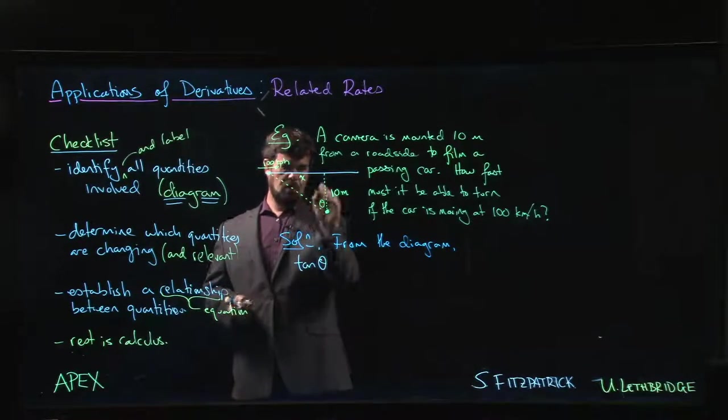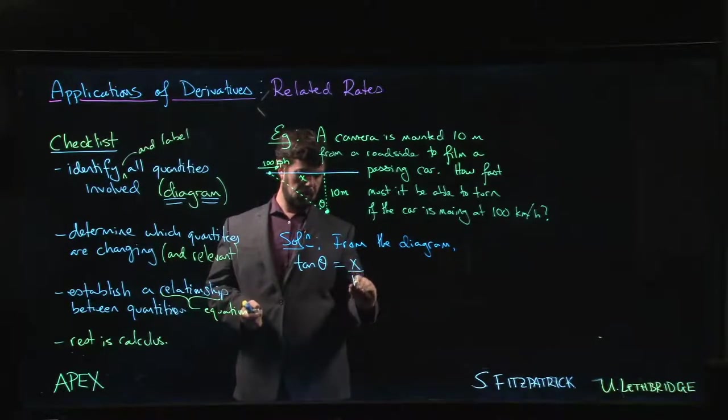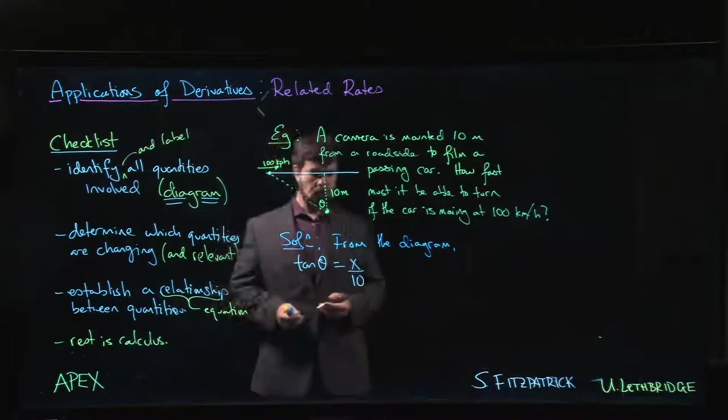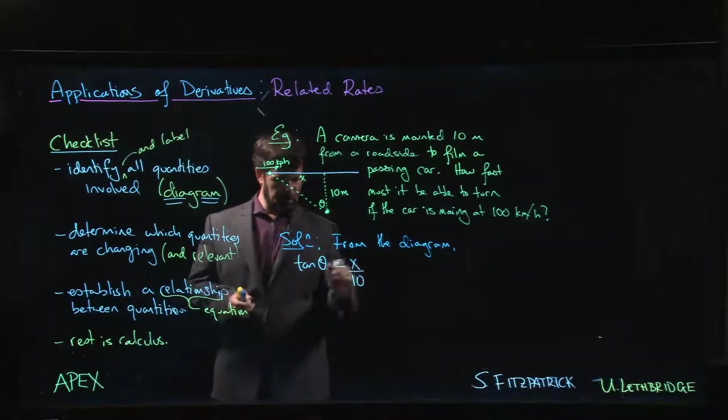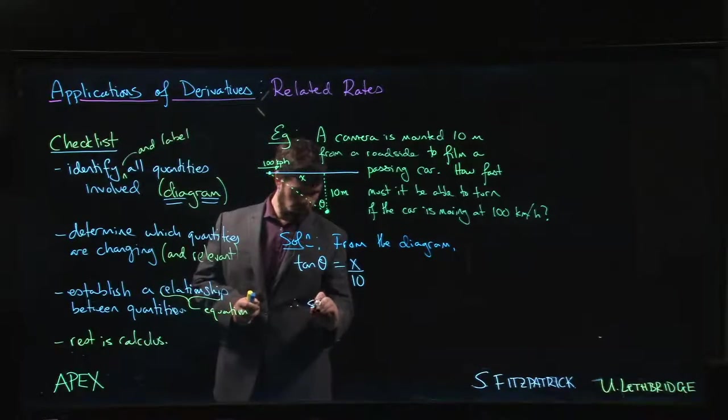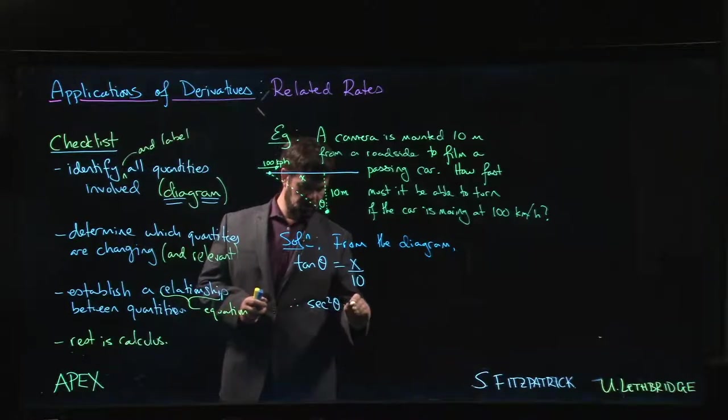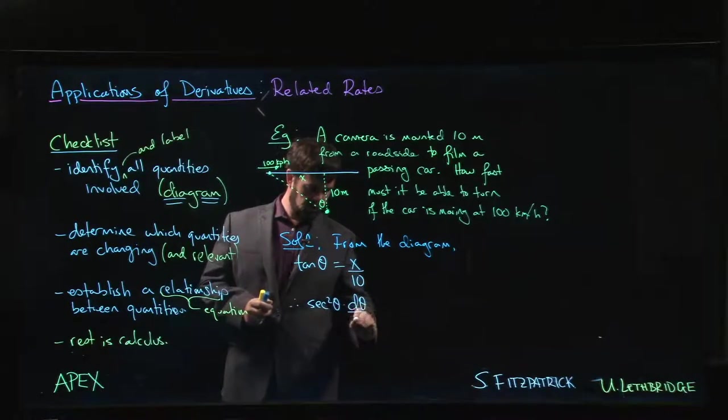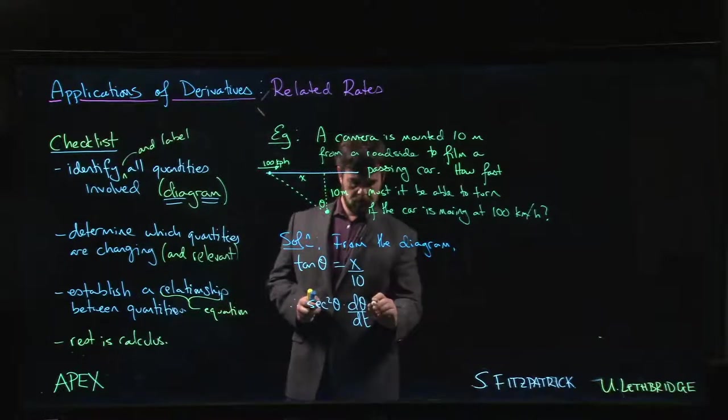So we know that tan θ is opposite over adjacent, which is x over 10. That sets us up. Now take the derivative of both sides. What's the derivative of a tangent? Secant squared.